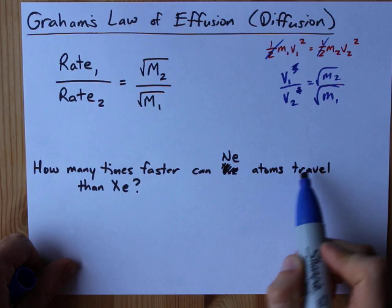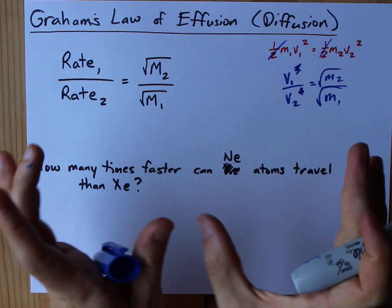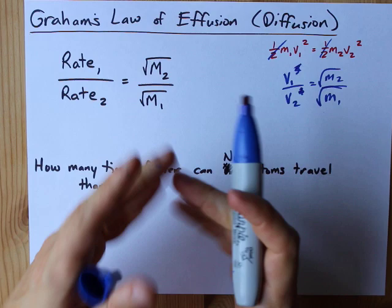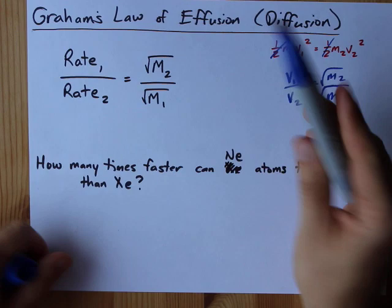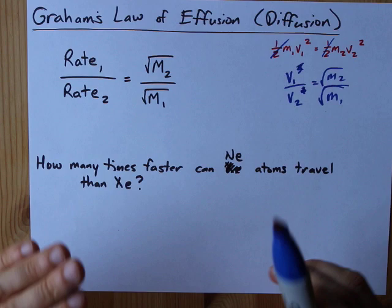The point is, how many times faster is neon than xenon? Now this works for diffusion, where you have two big bulks of them and they are mixing together slowly, and it works for effusion, where you have one bulk of one gas, or like a mixture of the two, and they're moving through a hole to escape to like the atmosphere. Effusion is through the hole, diffusion is for when the two bulks are mixing together.